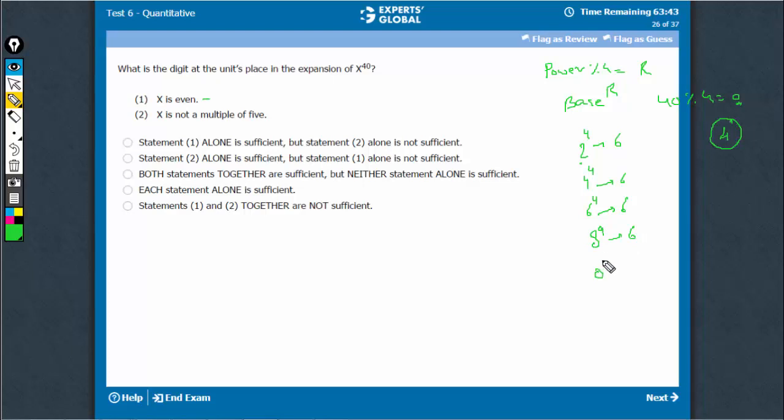However, 0 raised to power 4 leads to a 0. So, in 4 out of 5 cases, you get 6 as the units place. However, in 1 place, you are getting 0 at the units place. Now, because of this exception, there are 2 possible answers. Statement 1 is not sufficient.